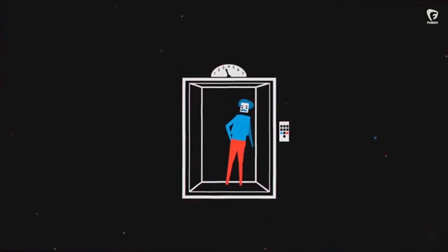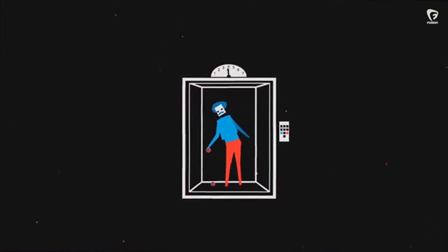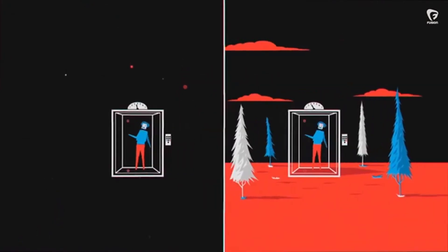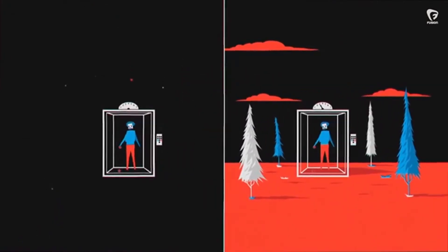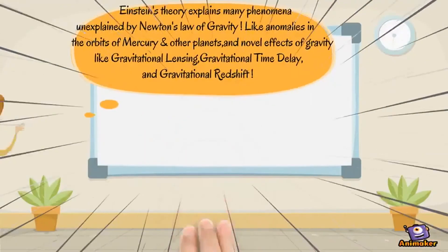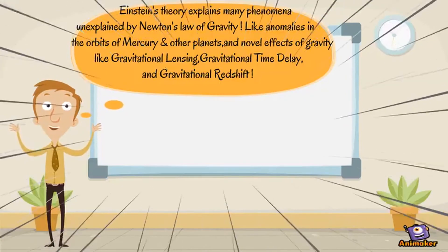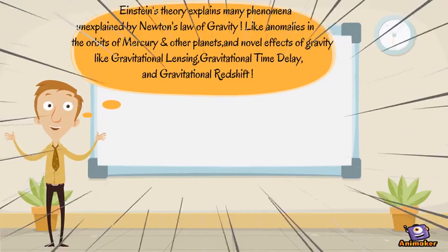Einstein's theory explains many phenomena unexplained by Newton's law of gravity, like anomalies in the orbits of Mercury and other planets, and novel effects of gravity like gravitational lensing, gravitational time delay, and gravitational redshift. It also explains one of the most fascinating things — the effect of gravity on time.